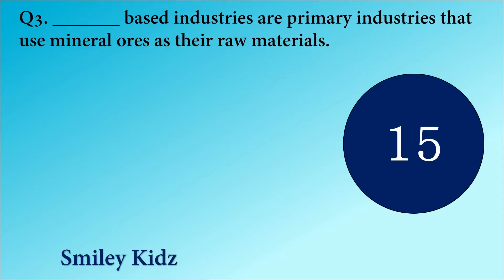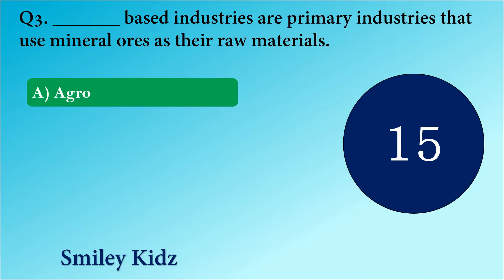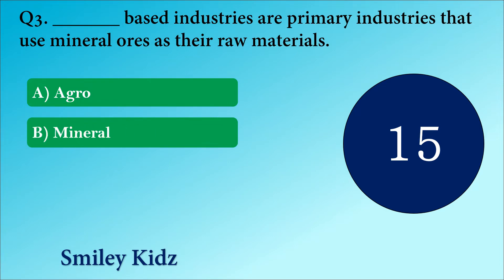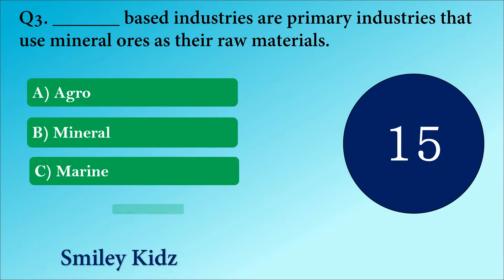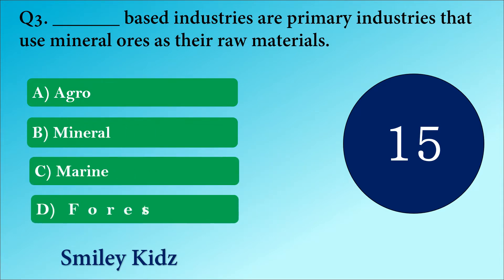Question number 3. Dash based industries — these are primary industries that use mineral ores as their raw materials. The options are A. Agro, B. Mineral, C. Marine or D. Forest.